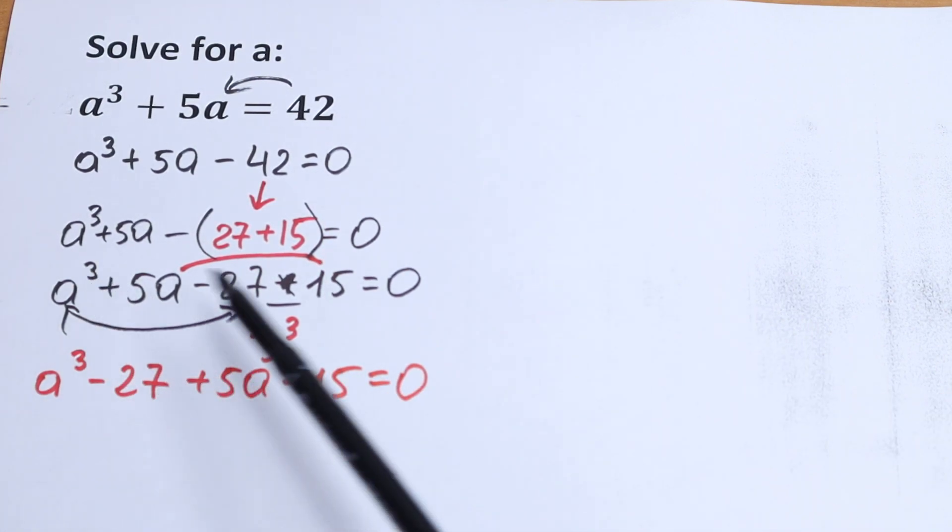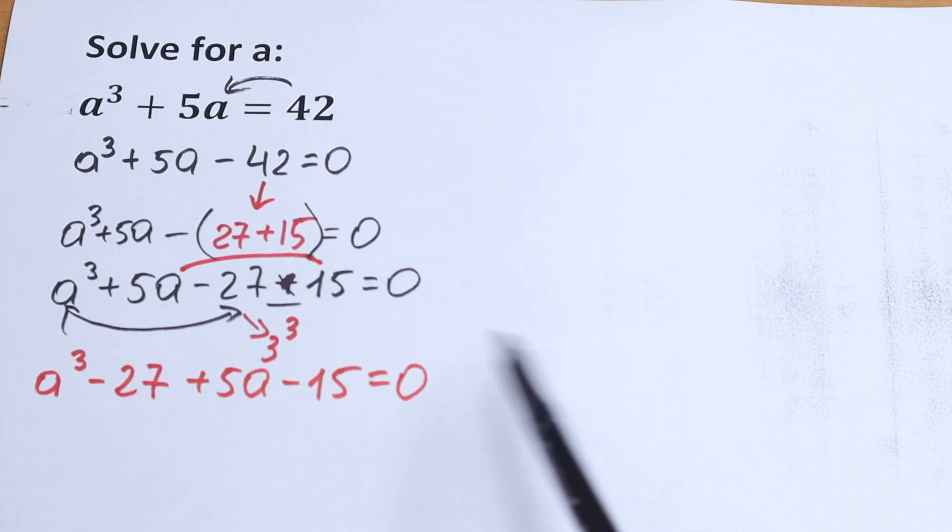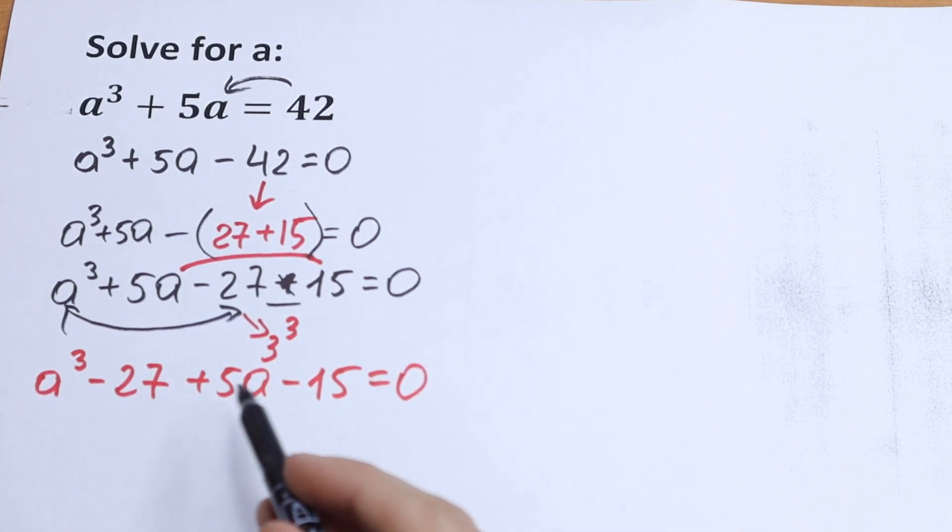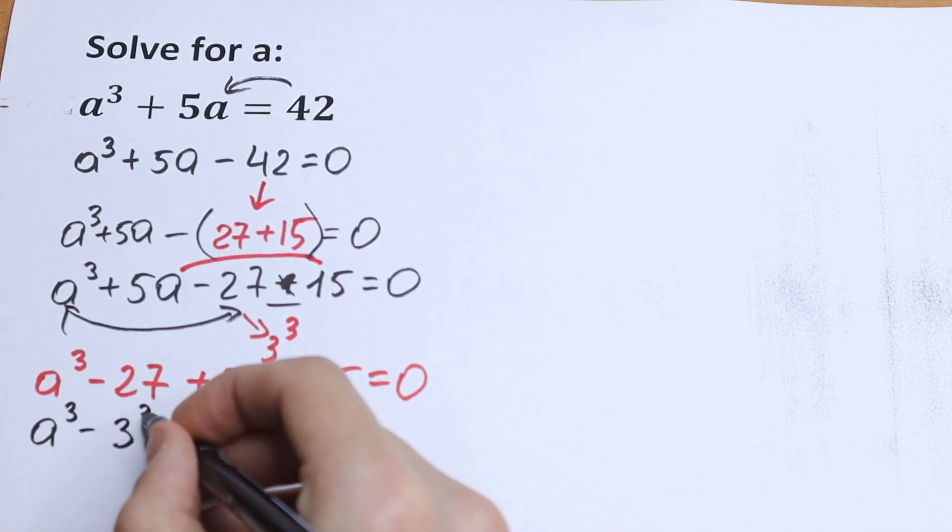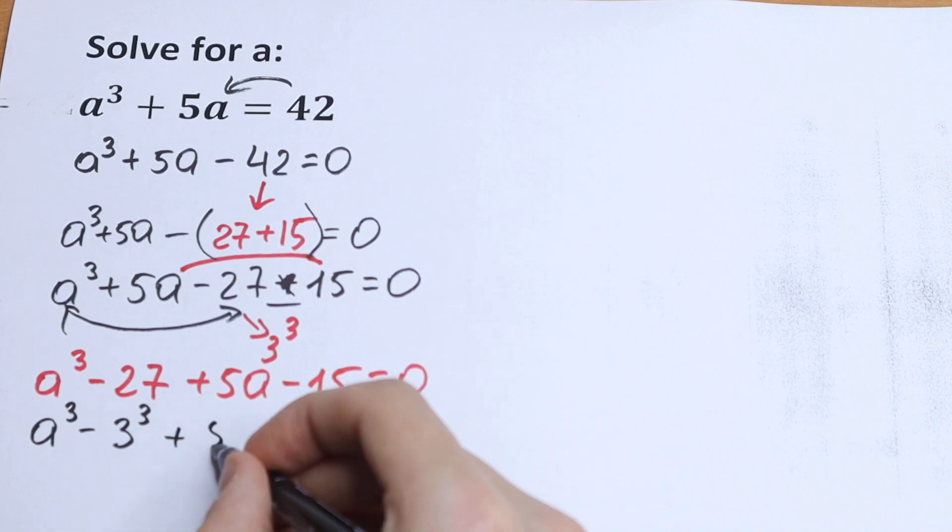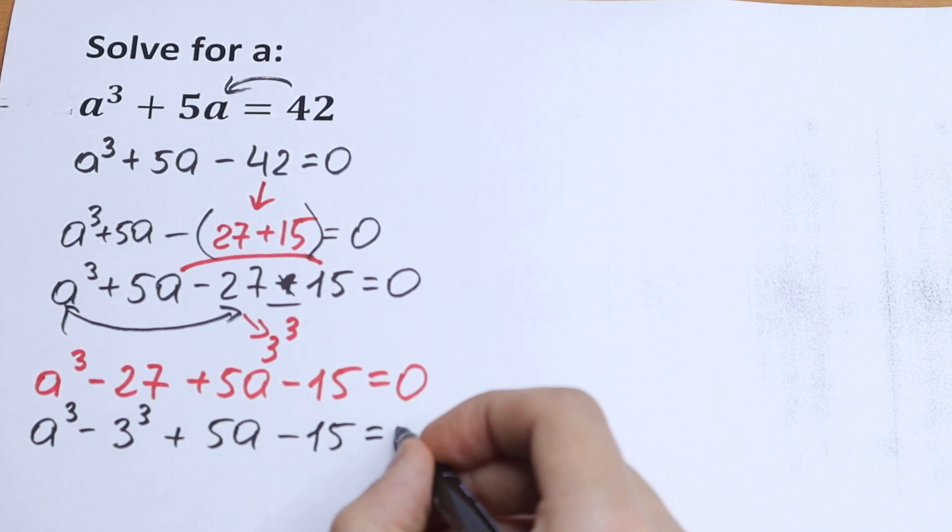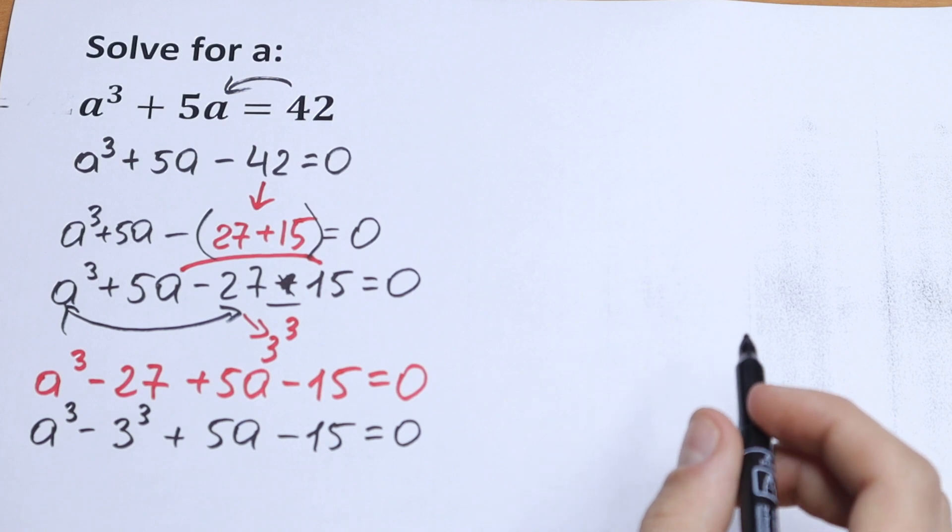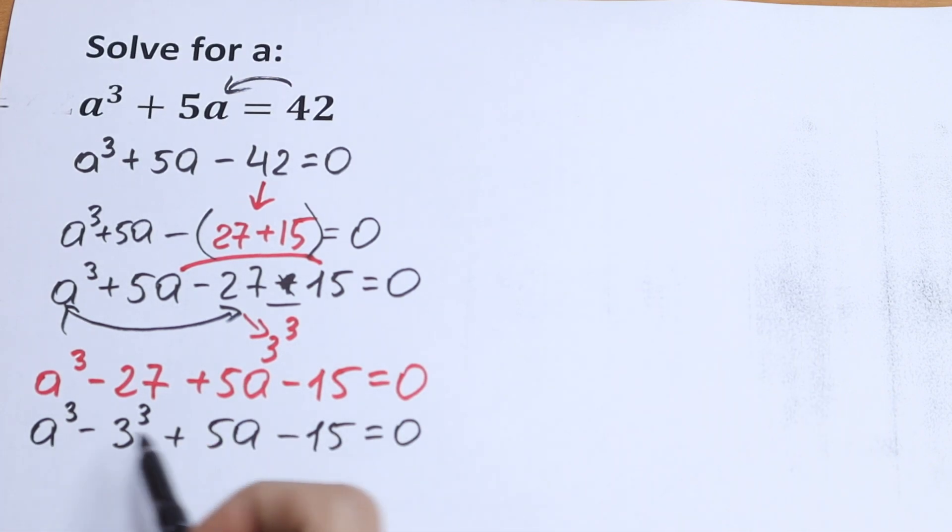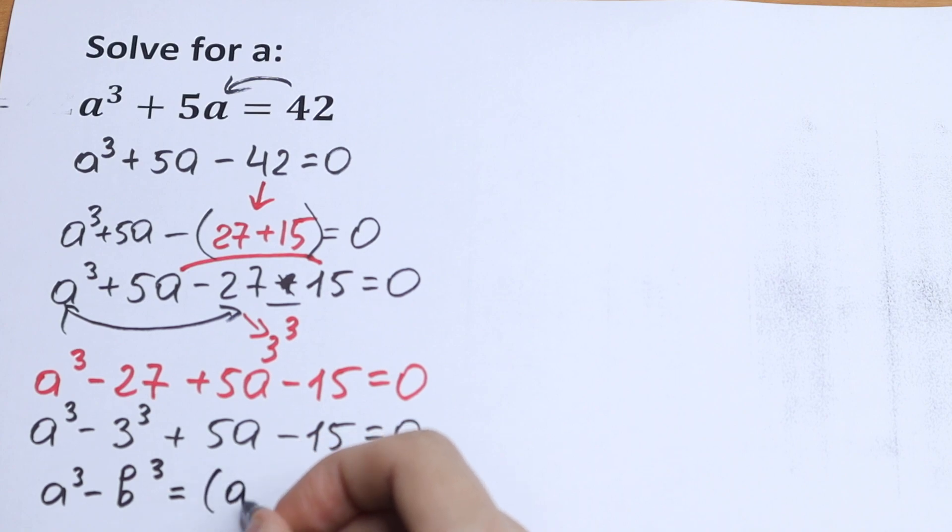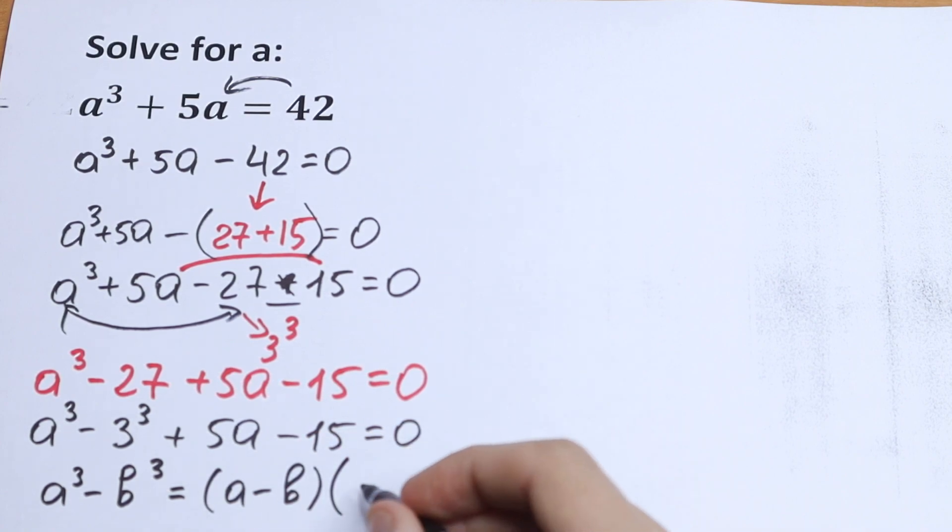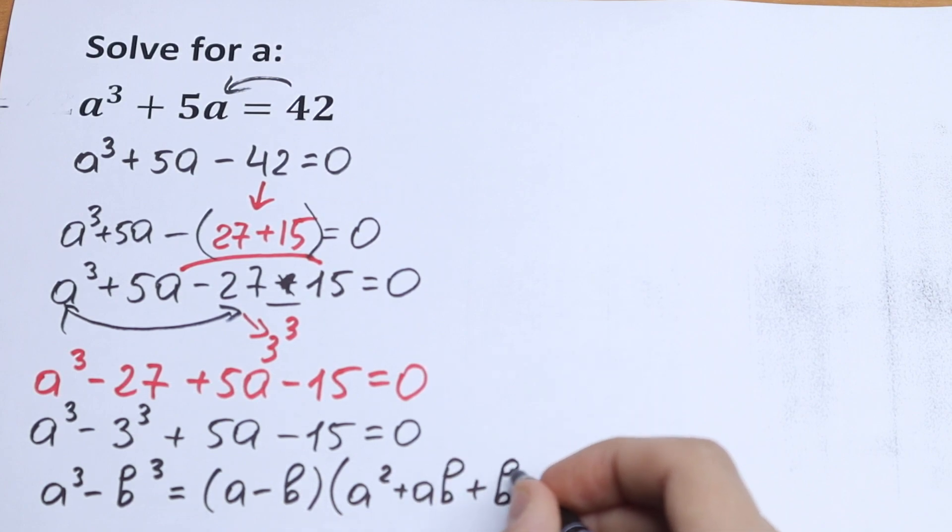So just group this a³ and this 5a and 15. Okay, we can write this 27 as 3³, a³ minus 3³ plus 5a minus 15 equal to 0. What we're going to do next? Of course, we all know the formula, the difference of cubes. So I write this formula right here: a³ minus b³ is equal to a minus b times a² plus ab and plus b².